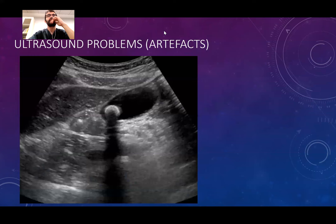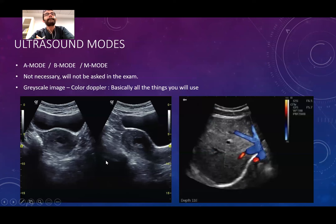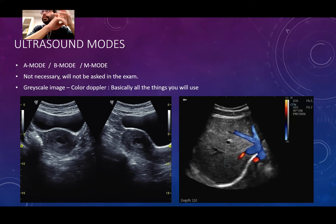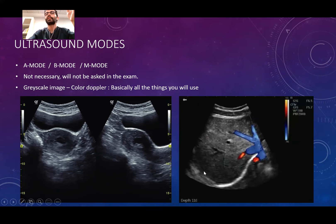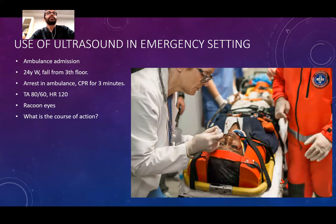There was also an artifact where a gallbladder stone creates a huge shadow behind it because sound waves cannot penetrate through the stone. Ultrasound has many modes — A mode, B mode, M mode — but these are not necessary for the exam. The two basic things we use are grayscale imaging (which is B mode) and color imaging for blood flow. That's all.